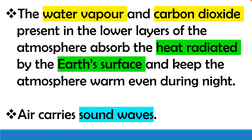Let me explain this. During the daytime, the rays of the sun heat up the earth's surface. At night, the earth gives back the heat. This heat is absorbed by water vapor and carbon dioxide present in the lower layers of the atmosphere, and keeps the atmosphere warm during the night. That is why it is not too cold for us during the night.